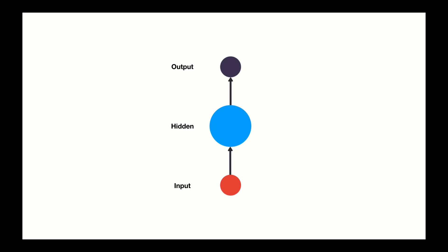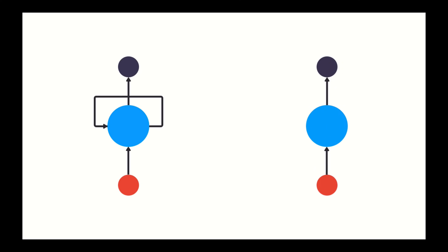What if we had a loop in a neural network that can pass previous information forward? And that's essentially what a recurrent neural network does. An RNN has a looping mechanism that acts as a highway to allow information to flow from one step to the next. This information is a hidden state, which is a representation of previous inputs.